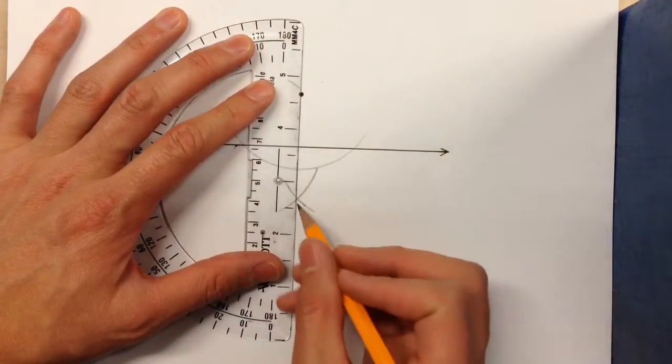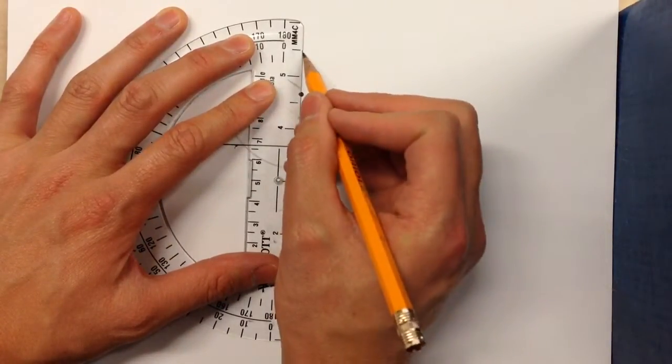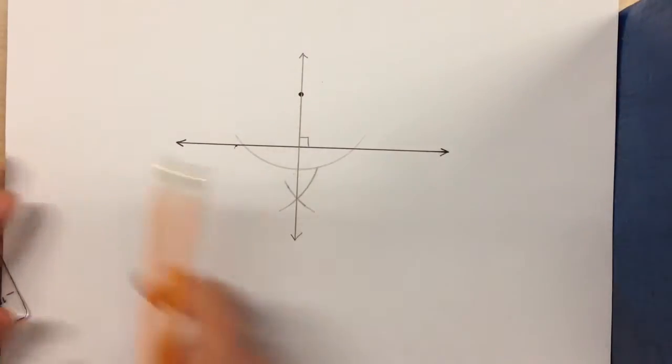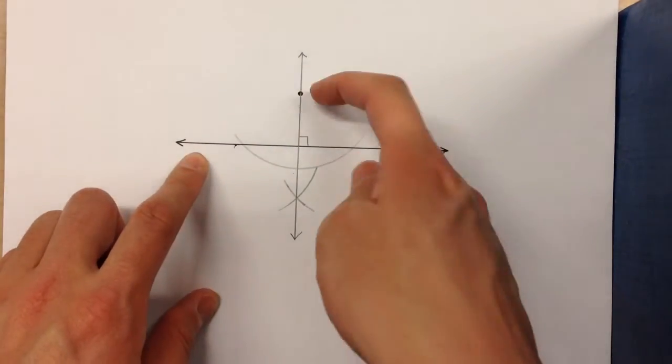From that point through the intersecting arcs down below, draw a line and there is your perpendicular line through that point.